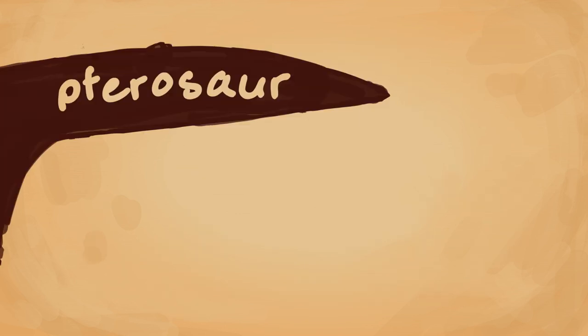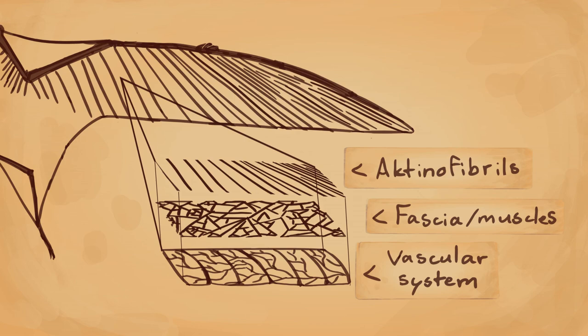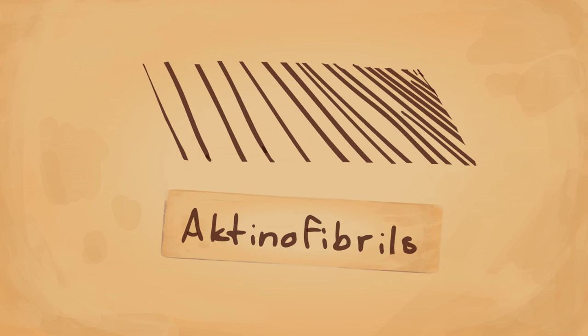But what else makes pterosaur wings different from airplane wings? Well, the most obvious difference is that they're not made of aluminum, but have layers of tissue, including the vascular system, fascia and muscle tissue, and actinofibrils.